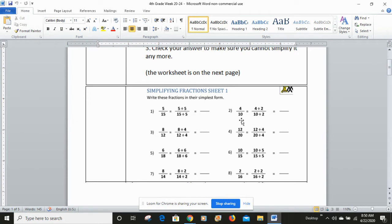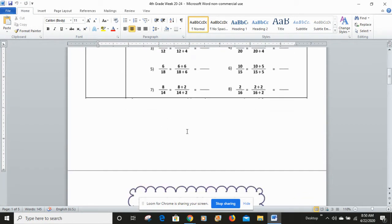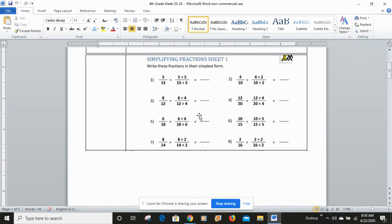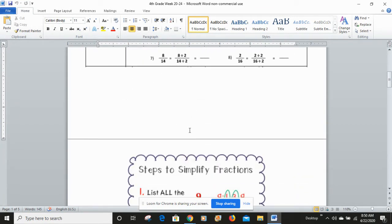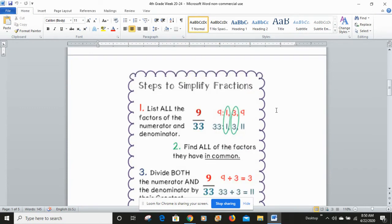5/15, 4/10, and so forth. And they've kind of given you a little bit of a hint here on the greatest common factor on these. But let's kind of do one from start to finish.